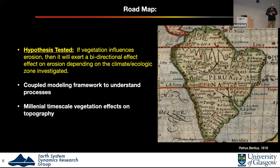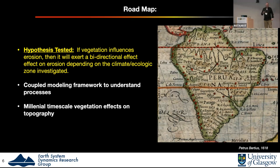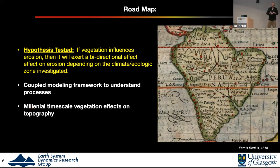What I'm going to do in this talk is test the Langbein and Schumm hypothesis — that vegetation influences erosion by having a bidirectional effect depending on the climate or ecological zone you're looking at. The remainder of this talk will focus on two points: illustrating the coupled modeling approach that took us the most time, and then concluding with a short example from work in progress on how this varies over millennial timescales.